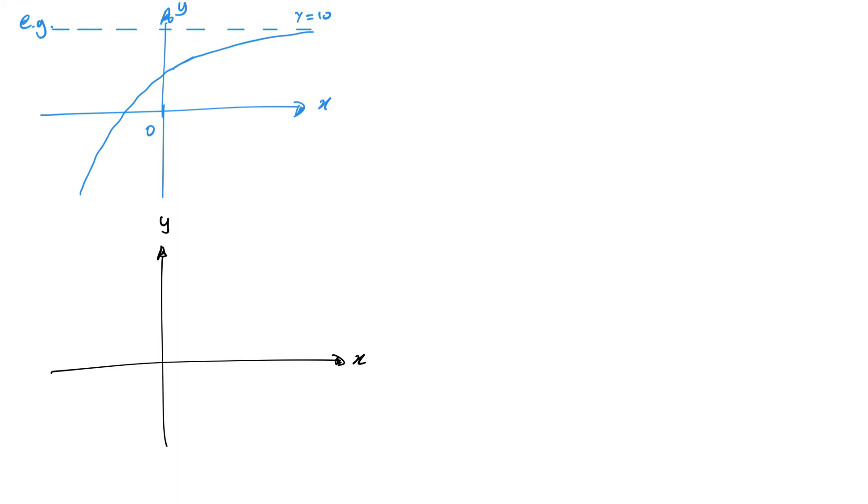So, second example. Hopefully not too difficult. This time we've got an asymptote in here. So anything with a horizontal asymptote means that that asymptote is along the X axis.